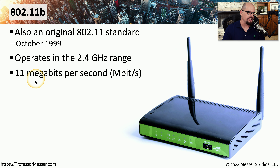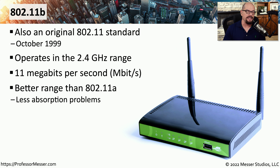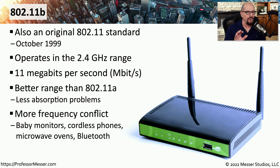So why would we choose the slower 11 megabit per second wireless standard when a 54 megabit standard was already available? In many cases, this is associated with the frequency in use. As mentioned earlier, 2.4 gigahertz frequencies tend to bounce off of devices instead of being absorbed, giving a bit longer distance. This will depend on the environment — if you're in a warehouse you may choose 802.11a because of the open space, but in an office setting with many people and desks, 802.11b works better.